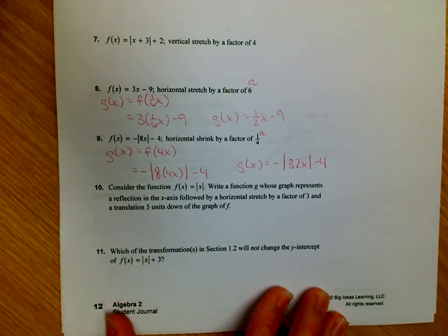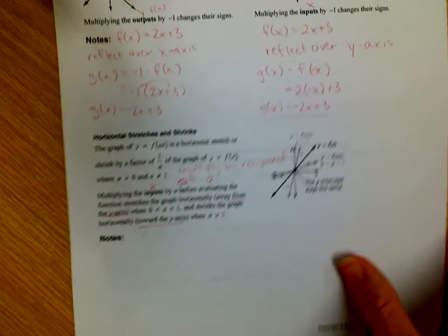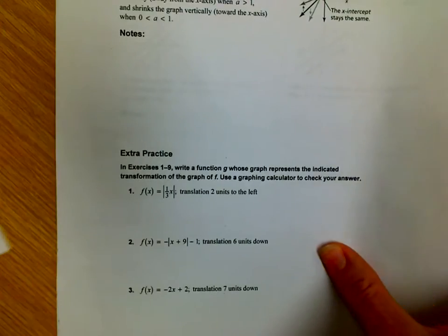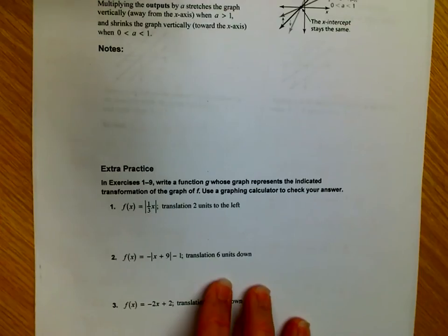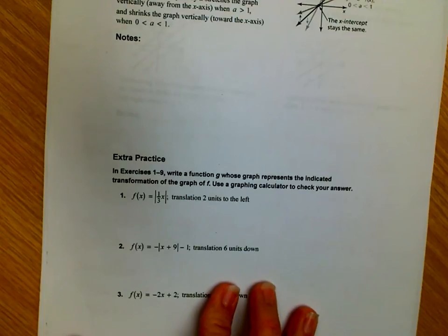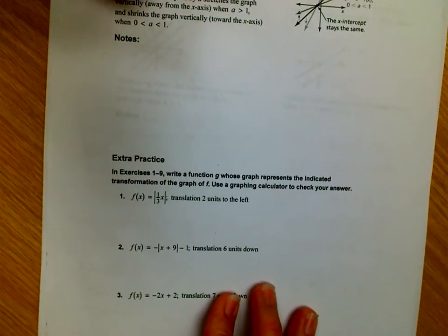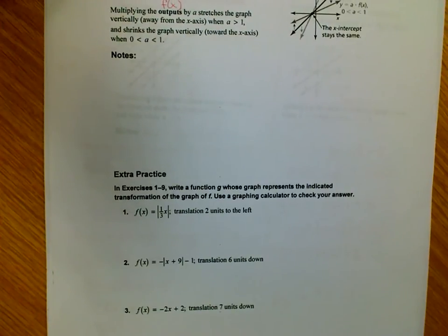If you look at the vertical stretches, which is at the top of page 11: with vertical stretches, there is no reciprocal. You are literally going to take your a value as given and multiply it by your entire function. You do not have to do the reciprocal — you just use the a value or factor that's given. To do a vertical change, we are multiplying our outputs, or our whole function, by the a value.